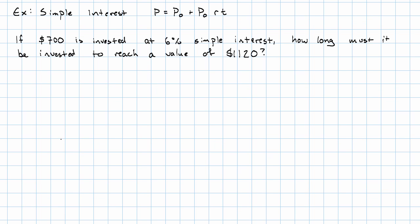So, we need to find out the values of all but one of the variables. P0, that's the initial amount, that's $700.